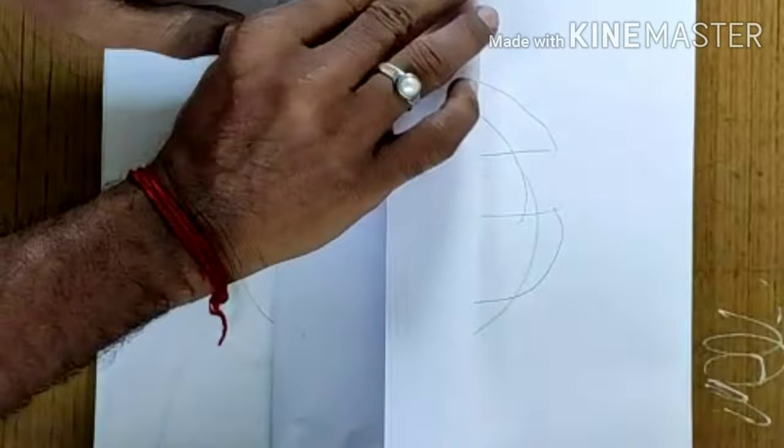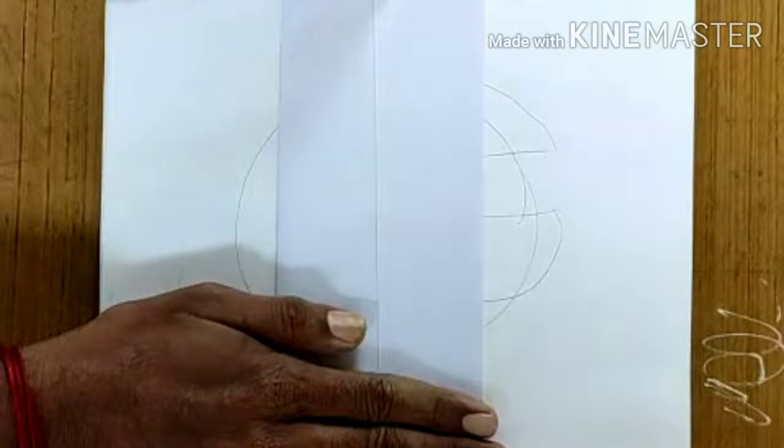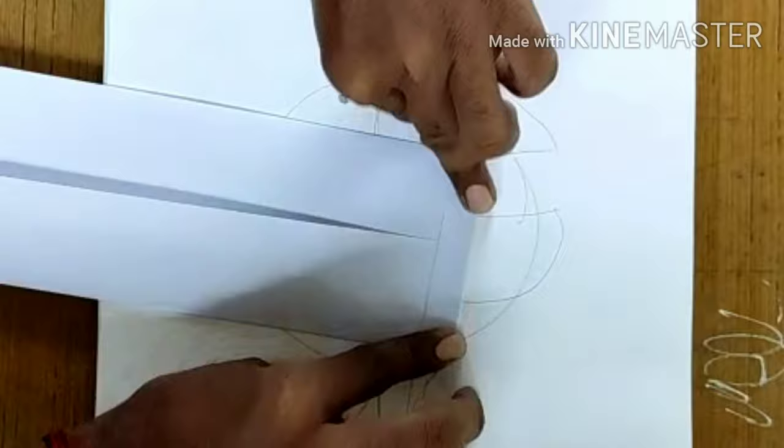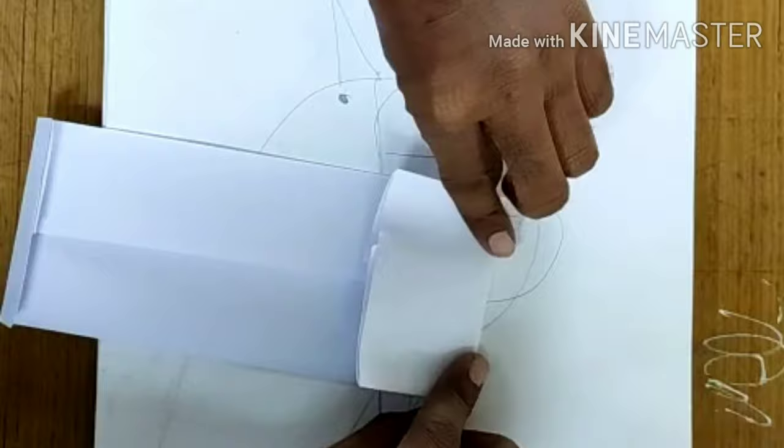For the envelope, you have to take a rectangular size paper. You have to fold till the center so that edges overlap for pasting. From the bottom side, you have to make a small flap. From the top side, you have to make a big flap for opening and closing.